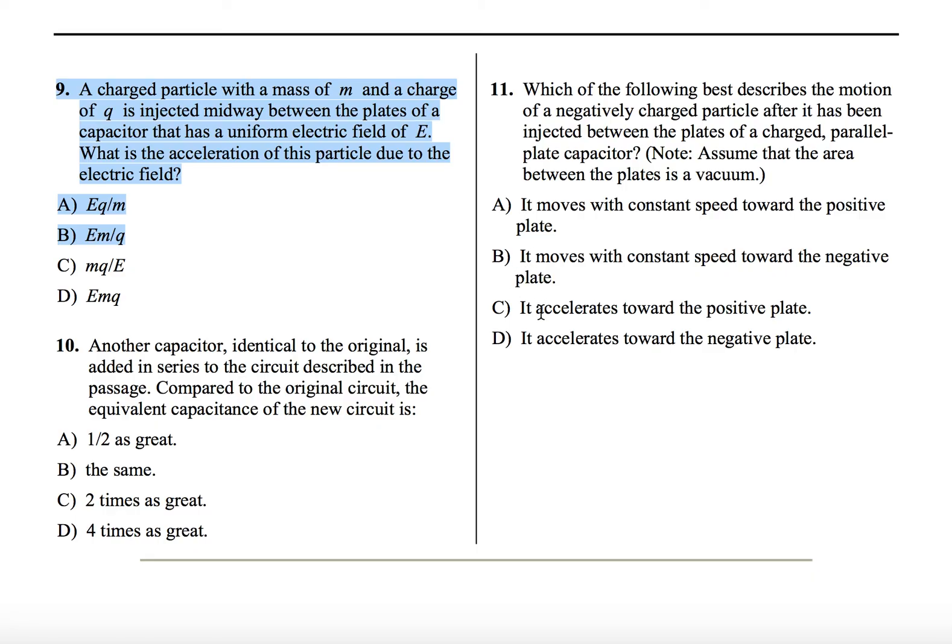So now we're left with A and C. And the question is, does it accelerate or does it move with a constant speed? And we know from question nine, because it's experiencing a net force, it will also experience an acceleration. So it's almost as if it's falling. Like a ball is falling towards the earth. We have this electron is going to be falling towards the positive plate. And that would be answer choice C.